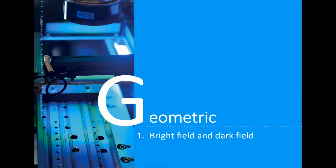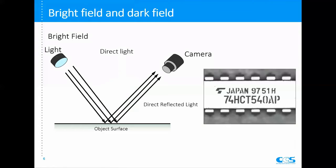The first topic is bright field and dark field. Bright field and dark field is the most common term in this industry — everybody talks about it, so it's really important. In simple words, bright field and dark field describe the position relationship between the light and the camera, and what kind of light the camera is looking at.